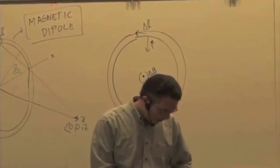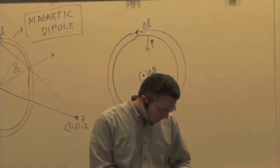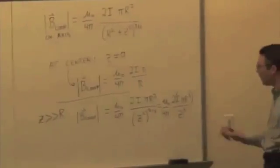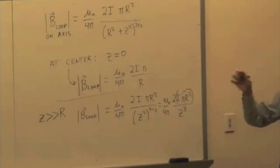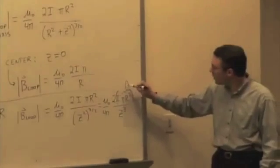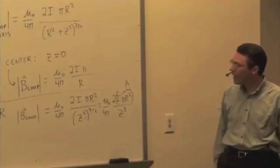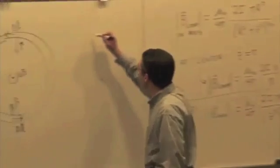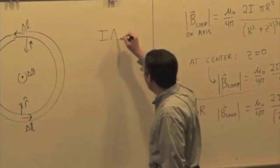A couple of things. One is this quantity, i times pi r squared. Pi r squared is what? That's the area, right? So, that's the area of the dipole, of the loop. And this quantity, i times the area, is sometimes called the, given the symbol mu,